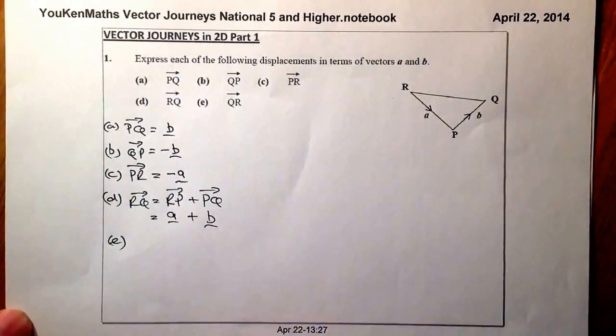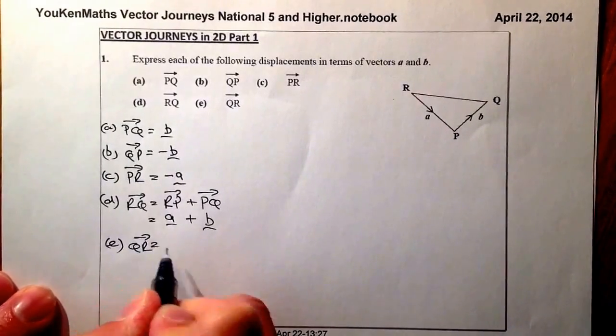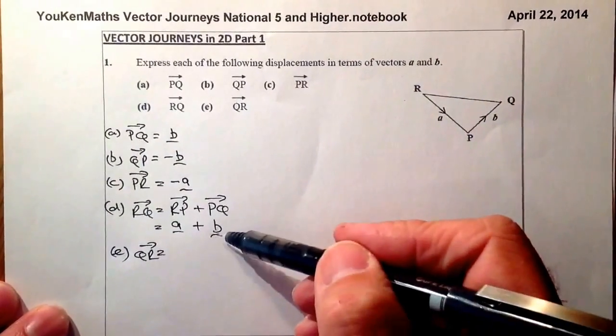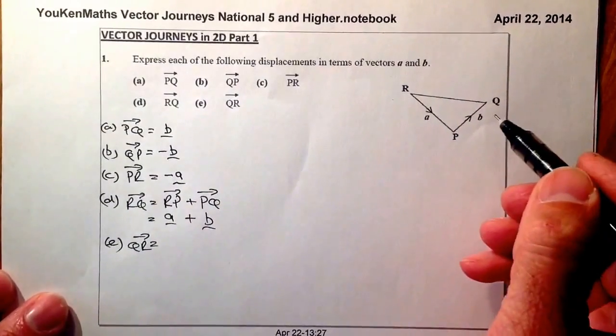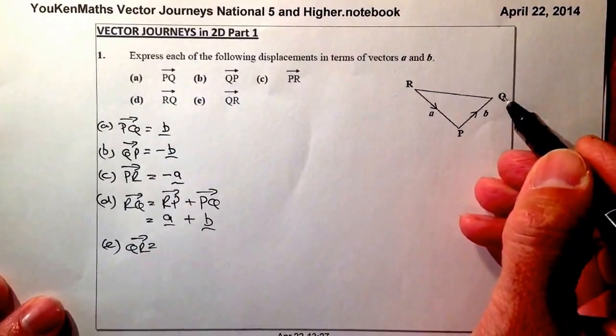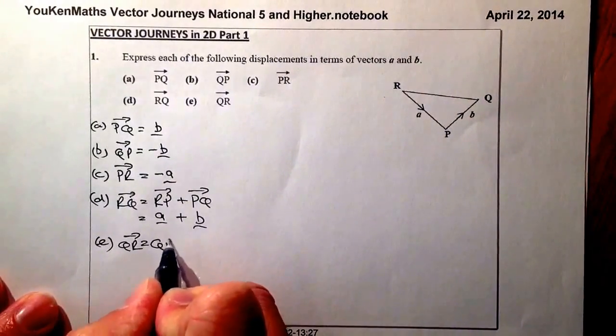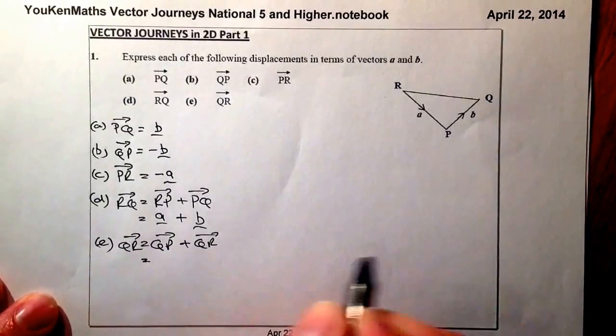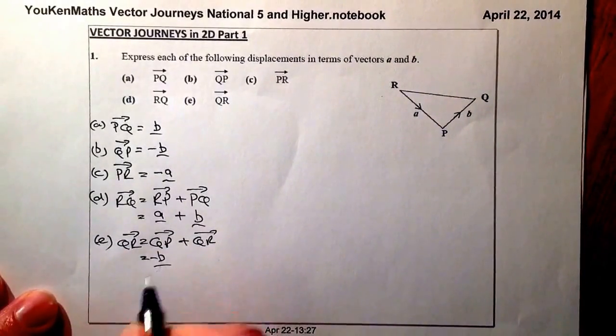For part E, what I've been asked to look at is the vector QR. So the vector QR is really just the opposite of RQ, so I could just take it straight from there if I wanted. What I'll do is I'll just think about it as an alternative route. So I'm going to go from Q to P and then from P to R. Q to P is the opposite direction to B, so that's going to be a minus B.